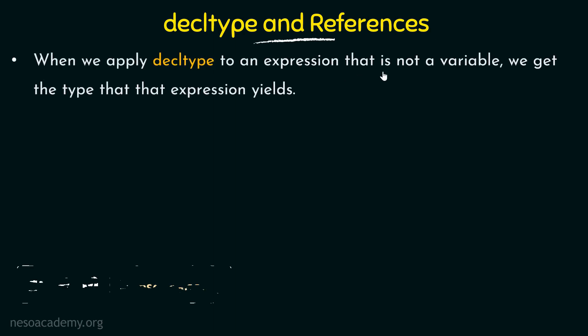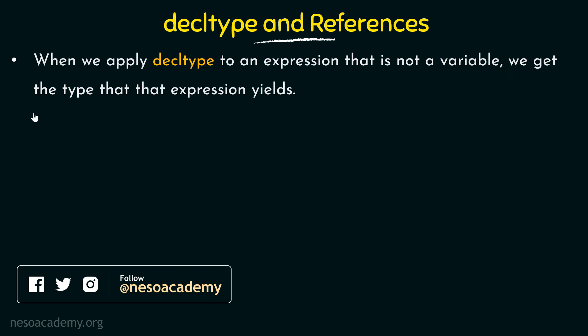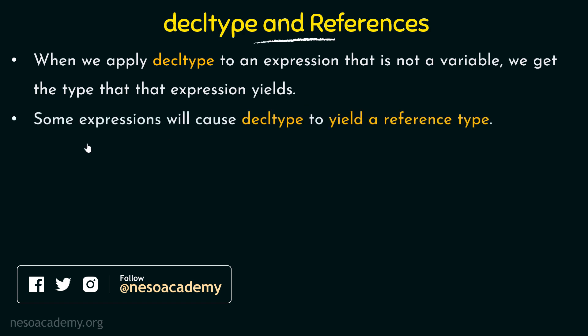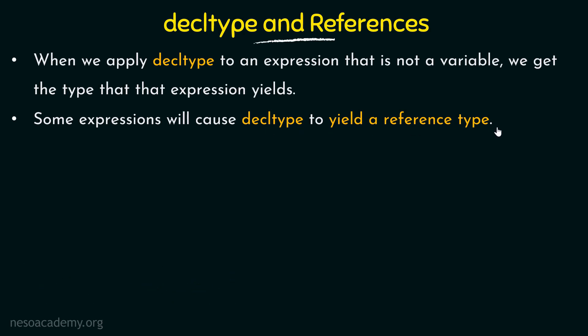When we apply decltype to an expression that is not a variable, we get the type that the expression yields. Whenever we apply decltype to an expression, whatever would be the type that is returned if that expression was evaluated, that would be the type that it yields. Because of this, some expressions will cause decltype to yield a reference type — it could be the case that a reference type is yielded.